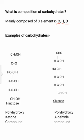Now let us have an example of carbohydrates. Here I have taken two examples: fructose and glucose. What is the difference between fructose and glucose? Fructose is a six-carbon containing carbohydrate with ketone as its functional group, and glucose is also a six-carbon containing carbohydrate having aldehyde as its functional group. Thus fructose is known as a polyhydroxy ketone compound and glucose is known as a polyhydroxy aldehyde compound.